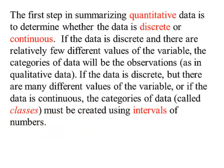The first step in summarizing quantitative data is to determine if the data is discrete or continuous. If the data is discrete and there are relatively few values of the variable, the categories of the data will be the observations as in qualitative data.